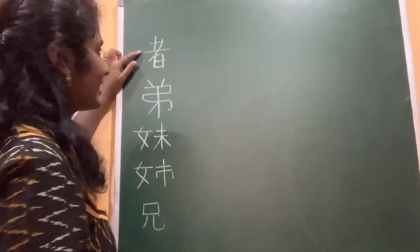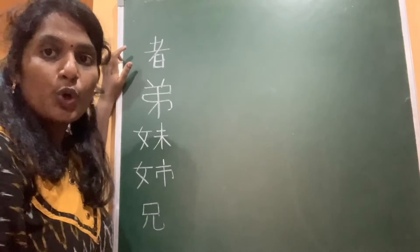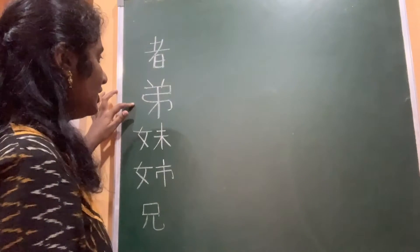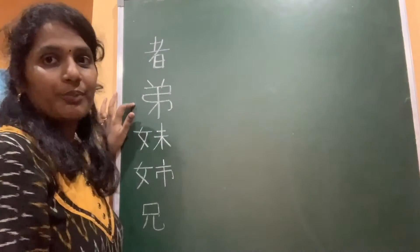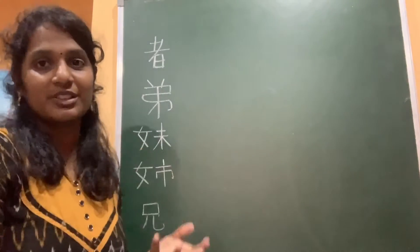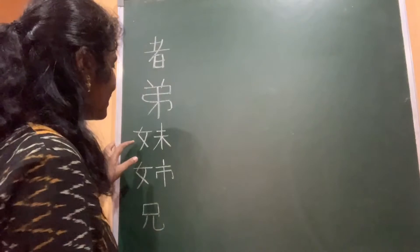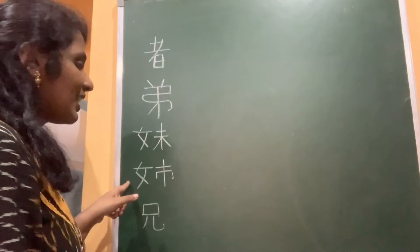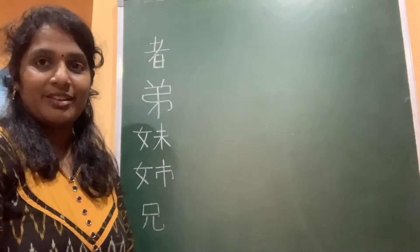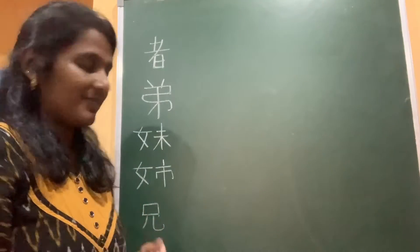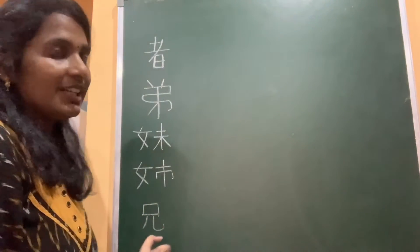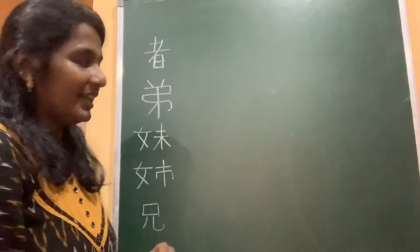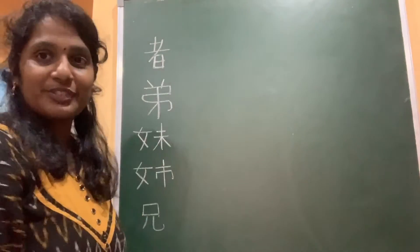These are the kanjis we will cover: sha or mono which means 'person', ototo which means 'younger brother', imoto which means 'younger sister', ane which means 'my elder sister', and ani which means 'my elder brother'. Let's see how to draw all of these kanjis.